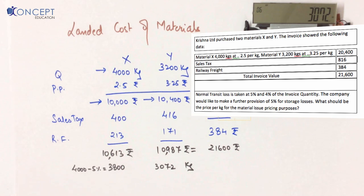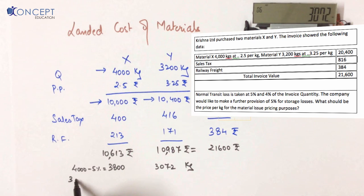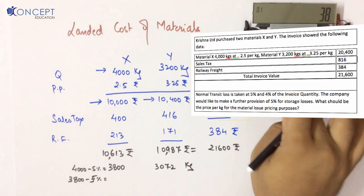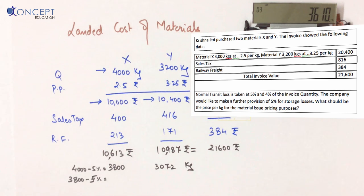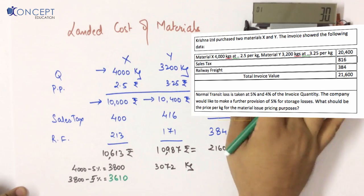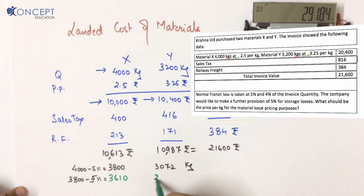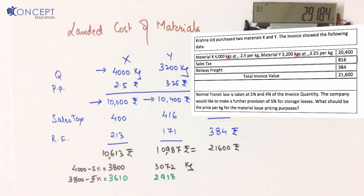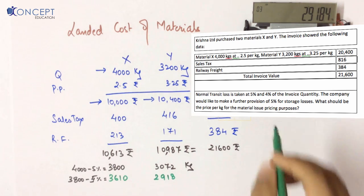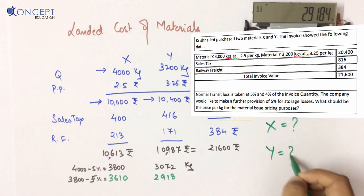Additionally, the company needs to create a provision for storage losses of 5% on both materials. For X: 3,800 minus 5% = 3,610 usable units. For Y: 3,072 minus 5% = 2,918.4 usable units. So the final usable quantities are 3,610 units of X and 2,918.4 units of Y.